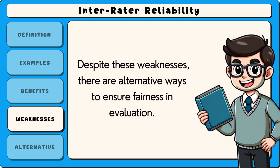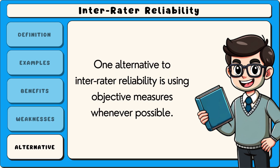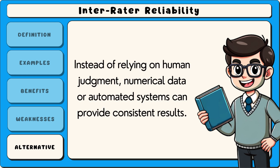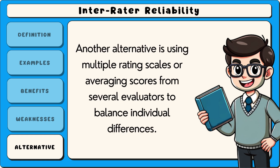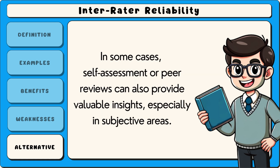Despite these weaknesses, there are alternative ways to ensure fairness in evaluation. One alternative is using objective measures whenever possible. Instead of relying on human judgment, numerical data or automated systems can provide consistent results. For example, standardised tests use clear scoring rules to minimise variation between graders. Another alternative is using multiple rating scales or averaging scores from several evaluators to balance individual differences. In some cases, self-assessment or peer reviews can also provide valuable insights, especially in subjective areas.